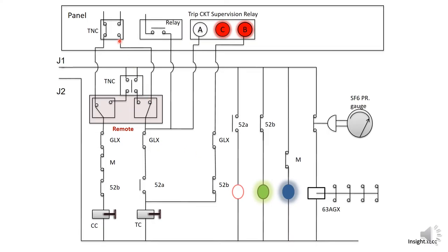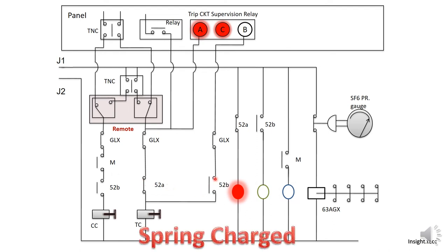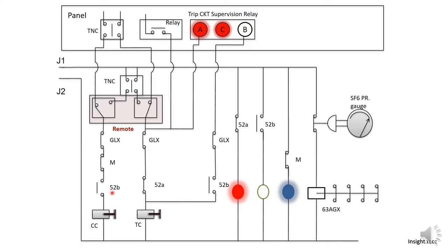When the TNC command is given, all the contacts will change their position. The spring charge contact will be closed, and 52A and 52B will change their position. So if 52A is closed, then in post-close supervision, the A-coil is operated and the C-coil is operated.